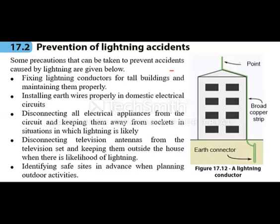For tall buildings, which are more susceptible to lightning accidents, we can fix lightning conductors. The diagram shows where a lightning conductor is connected to a building. When a bolt of lightning hits, the electric current passes through this conductor, which is made of a broad metal strip, and it gets discharged without damaging the building.